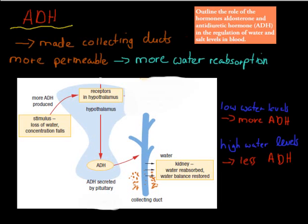Welcome to the second summary video for the Regulating Substances chapter. We're going to cover videos number 9 to 16 in this video. The first dot point says: outline the role of the hormones aldosterone and antidiuretic hormone ADH in the regulation of water and salt levels in the blood.